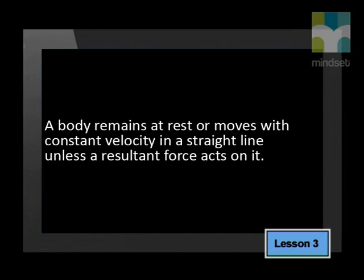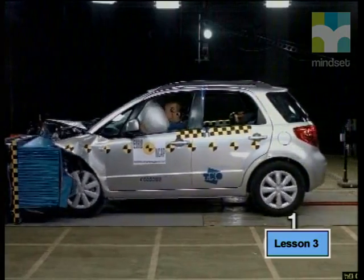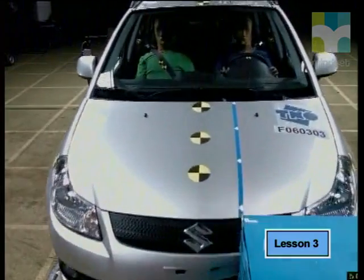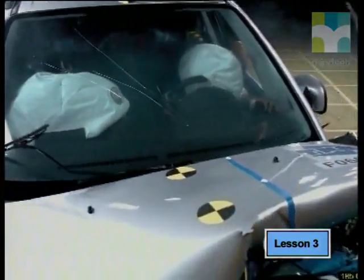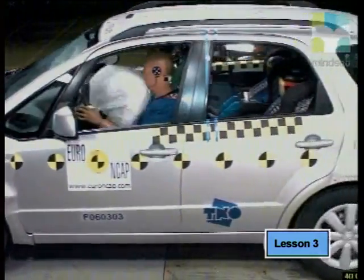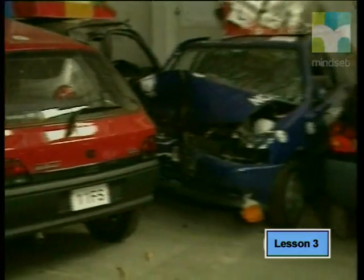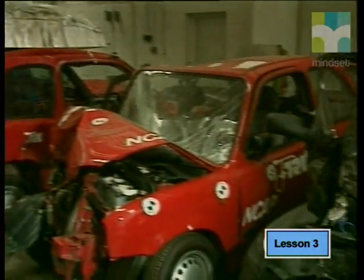Let's consider Newton's first law again. Newton's first law of motion tells us that a body remains at rest or moves with constant velocity in a straight line unless a resultant force acts on it. When the car hits the barrier, the barrier exerts a force on the car and the car exerts a force on the barrier. The resultant force causes the car to stop suddenly. Notice that the interacting bodies here are the car and the barrier. There is no resultant force acting on the passenger. Therefore, according to Newton's first law, the passenger keeps moving forward at the same speed and in the same direction until a resultant force acts on him. Unfortunately, this normally happens when the passenger's head collides with the windscreen, which can be fatal or cause very serious head injuries.